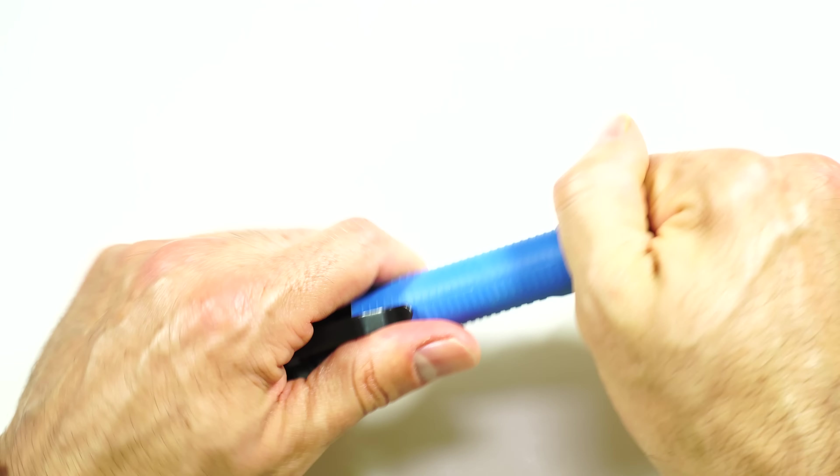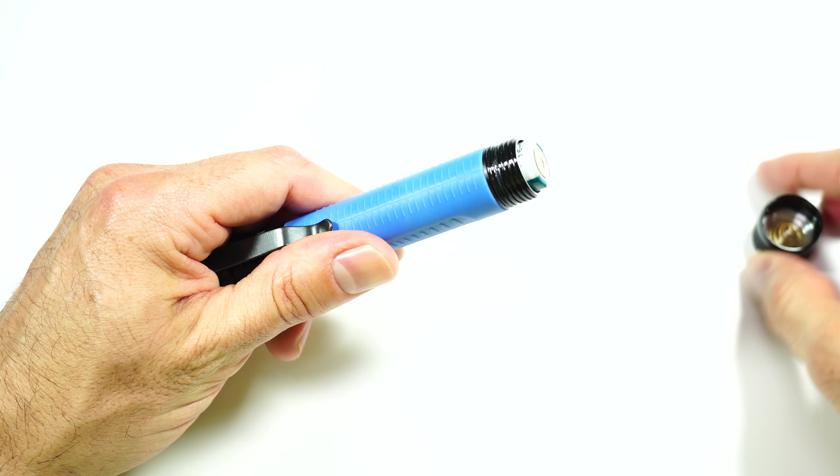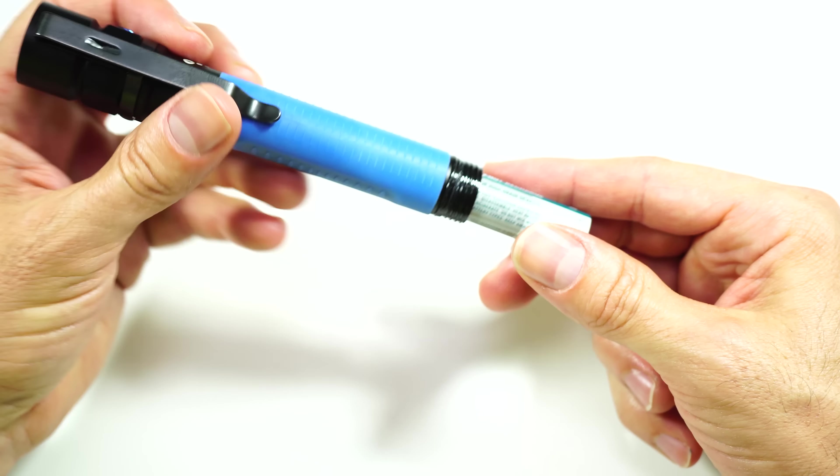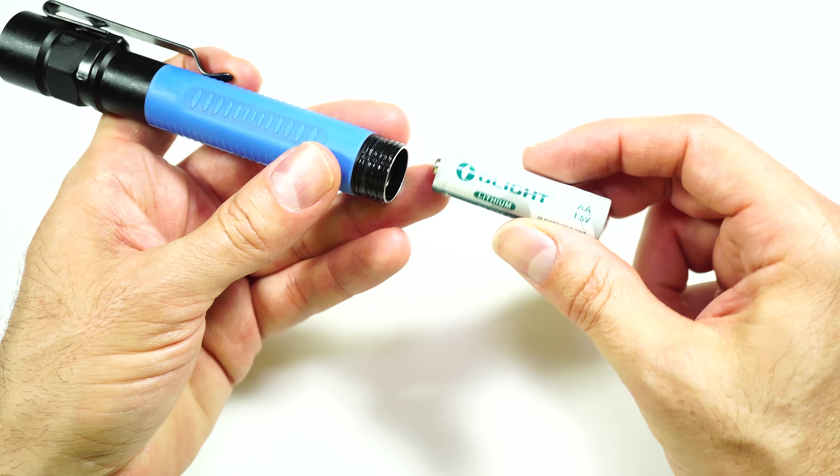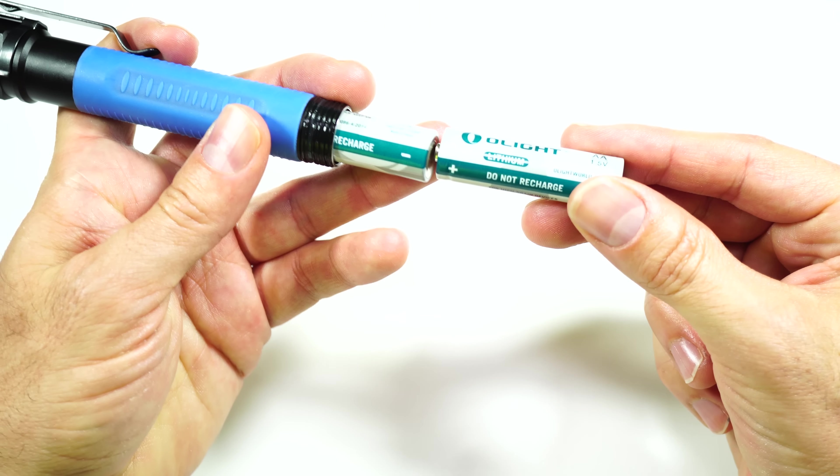This light is powered by two AA batteries, and it will go from a low of 0.5 lumens up to a turbo 550 lumens, and they're kind enough to include two of their own AA batteries with it.